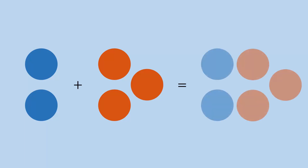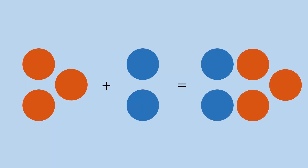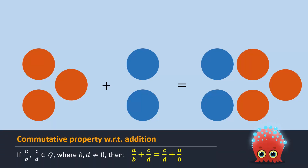Consider these two sets of balls. When they are added, we will have a set of five balls. If we change the order of the addition, we will still have a set of five balls. So the order in which the balls are added does not matter. The same is true for the addition of two rational numbers: if a over b and c over d are any two rational numbers where b and d are not equal to zero, then a over b plus c over d equals c over d plus a over b. This is called the commutative property of rational numbers with respect to addition.